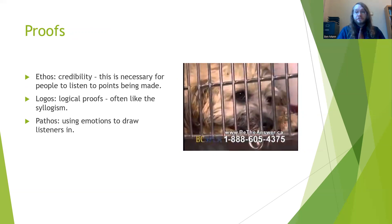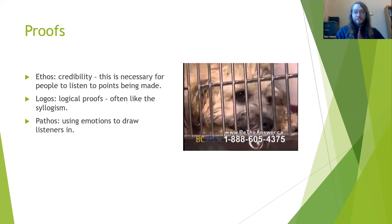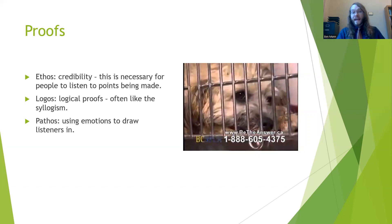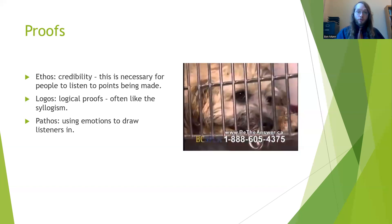Logos involves the use of logical proofs — the idea that we structure an argument based on using connections between key points to reach conclusions. And then lastly is pathos, the way that we use emotions to draw in listeners to a message. For example, if you have ever seen advertisements for adopting from a shelter or the SPCA that depict animals in cages with really sad music encouraging you to adopt a pet, that's an example of using emotion in order to persuade.